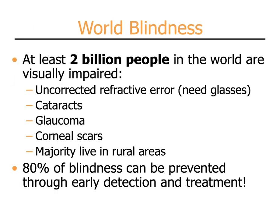World blindness is a significant problem, with at least two billion people in the world who are blind or visually impaired. The most common cause is uncorrected refractive error, or need for glasses, followed by diseases such as cataract and glaucoma, and corneal scarring from infections such as trachoma. A majority of these patients live in rural areas where it is very difficult to receive care. The good news is 80% of blindness can be prevented through early detection and treatment.